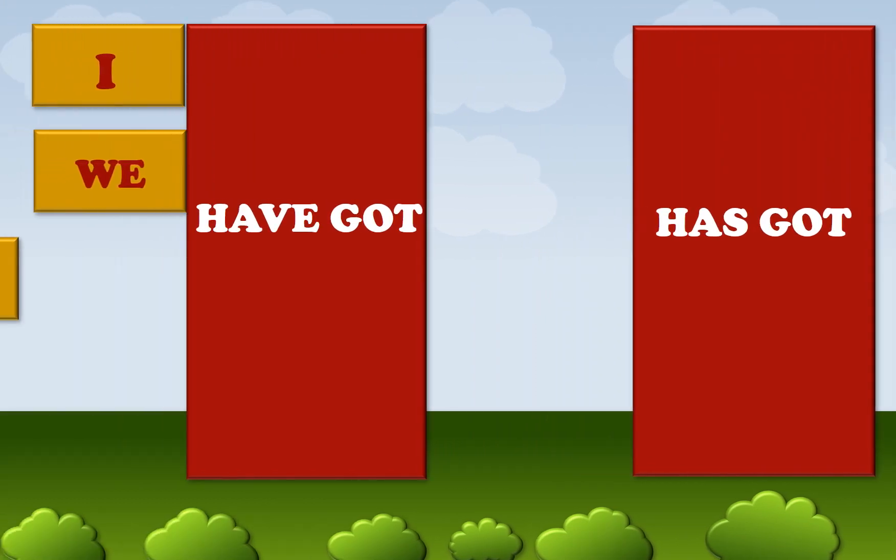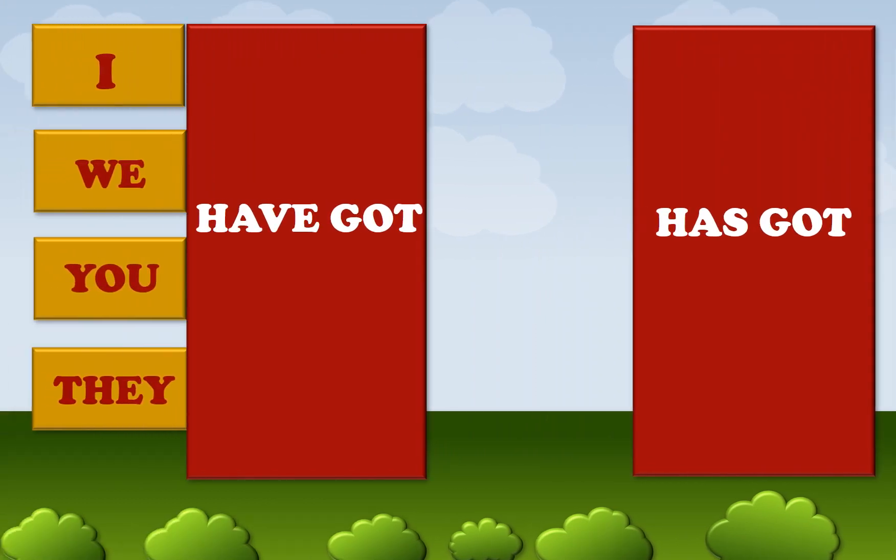What do you think about have got? I put have got with I, we, you, or they. For example, I say: I have got a cat. We have got a big car. You have got good grades. They have got a big class.